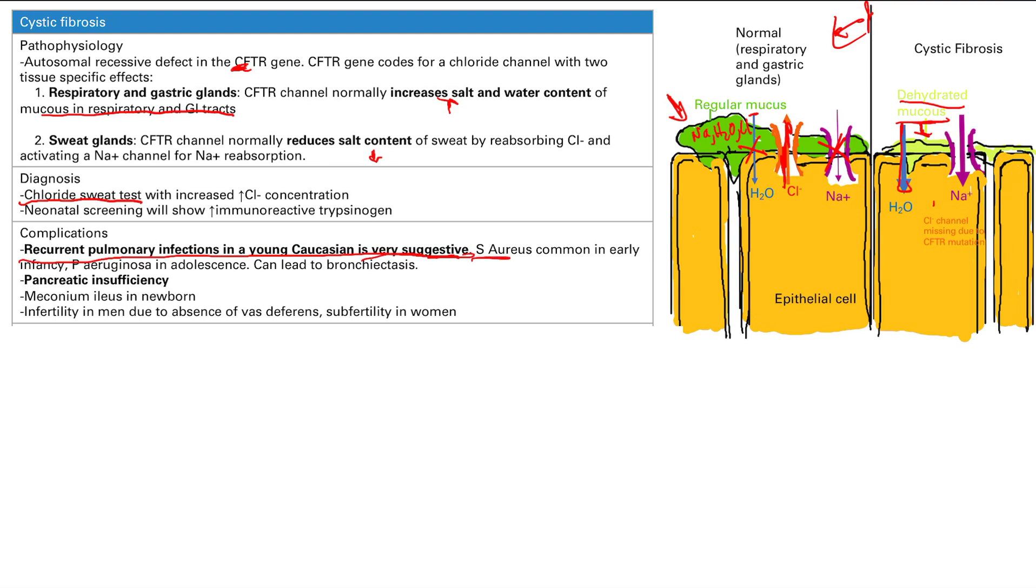Staph aureus is most common in early infancy and then Pseudomonas aeruginosa is in adolescence. This one's very key to know. Pseudomonas aeruginosa is very associated with cystic fibrosis. If you have these recurrent pulmonary infections, they can lead to bronchiectasis, and that is definitely true in cystic fibrosis. Recurrent pulmonary infections in young Caucasians because their thick mucus puts them at risk for these pulmonary infections.